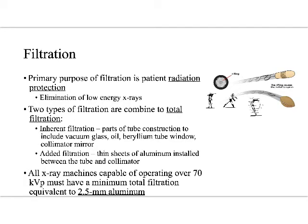Changing gears — the last part of ballistics we're going to talk about is filtration. The metaphor I'll use is rifling: filtration functions almost like rifling. It allows us to filter out the useless x-rays so that what we're sending at the patient is just the high-quality stuff. The primary purpose of filtration is radiation protection — it eliminates the low-energy x-rays from the beam, and the term for that is hardening the beam.